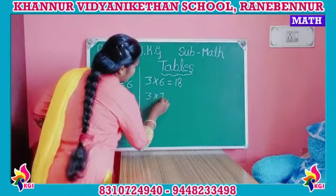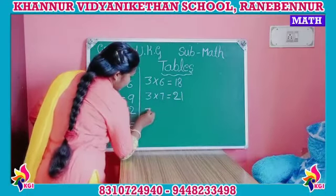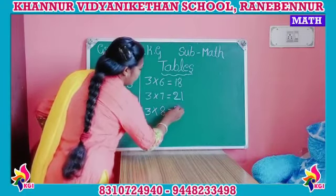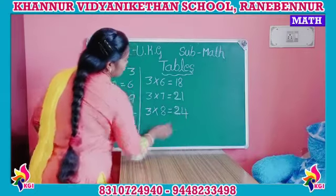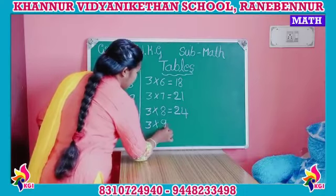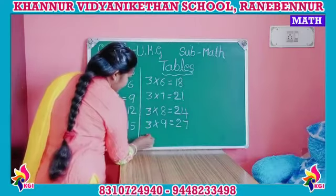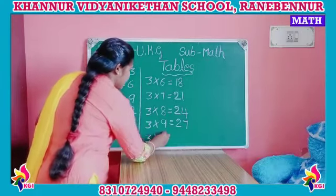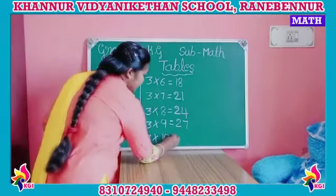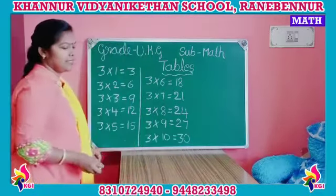Three sixes are eighteen. Three sevens are twenty-one. Three eights are twenty-four. Three nines are twenty-seven. And the last one — three tens are, what is it? Tell me. Three tens are — yes, three tens are thirty!